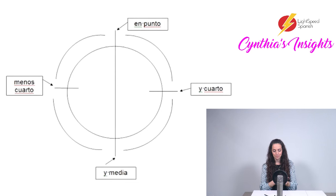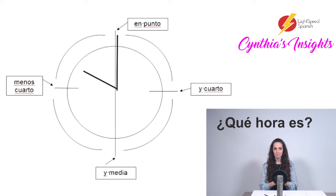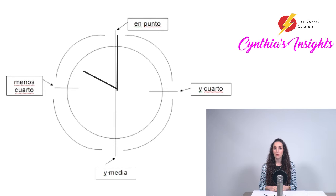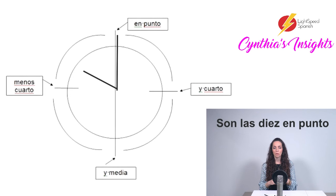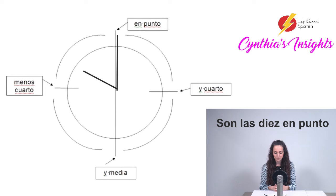Por ejemplo, the first one is ten o'clock. ¿Qué hora es? It's ten o'clock. Because 'ten' is plural — more than one — vamos a decir 'son las': Son las diez en punto. It's 'they are ten on the dot' — 'en punto.'